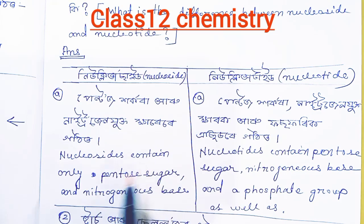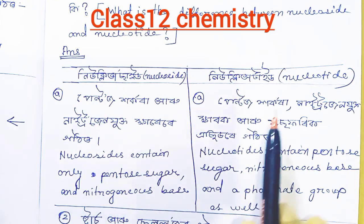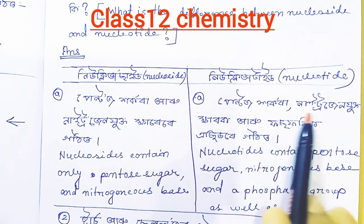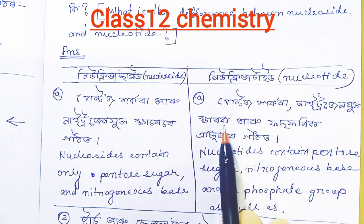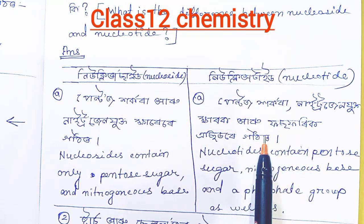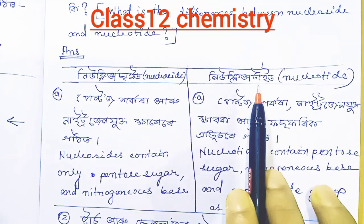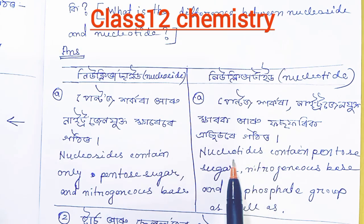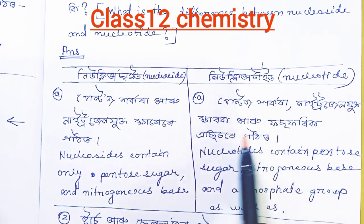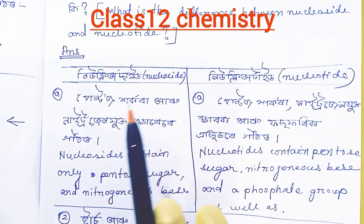A nucleoside contains only a pentose sugar and a nitrogen base. A nucleotide contains a pentose sugar, a nitrogen base, and a phosphate group as well. This means that is the key difference between nucleoside and nucleotide.